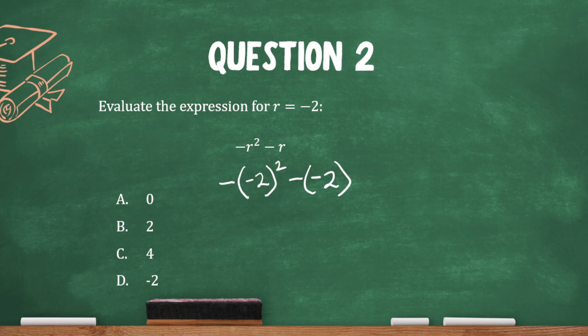And let's follow our order of operations and take care of that exponent first. Negative 2 squared is negative 2 times negative 2, which is positive 4. And now let's carry down this negative sign that was outside the parentheses.